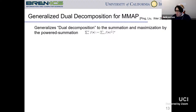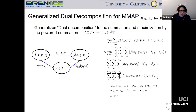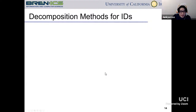For mixed inference — using both summation and maximization simultaneously — we can combine the generalized summation operator (covering both summation and max) with dual decomposition methods. This is called the generalized decomposition method. The idea is that given those elimination operators, we can decompose the problem and solve a certain optimization problem in the end. We will see more examples later in the context of influence diagrams.